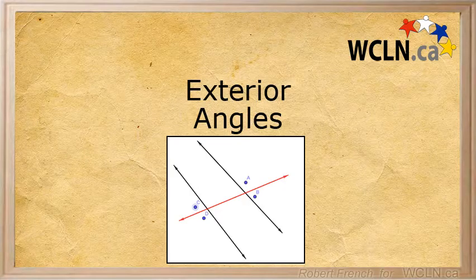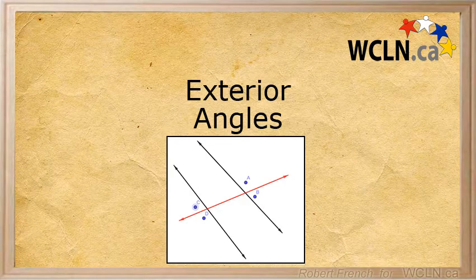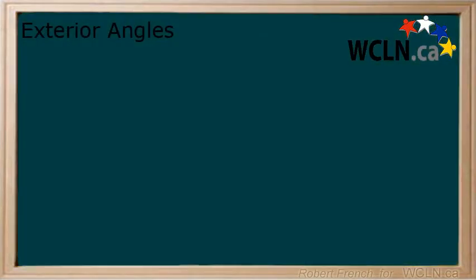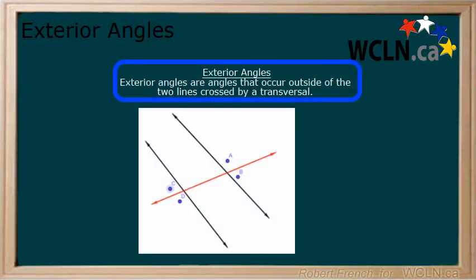In this tutorial we will be learning about exterior angles. Exterior angles are angles that occur outside of the two lines crossed by a transversal as seen here.